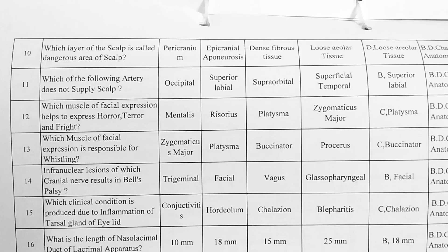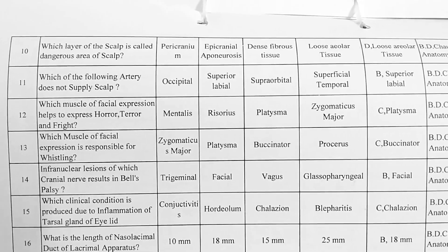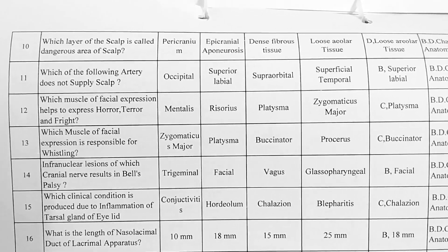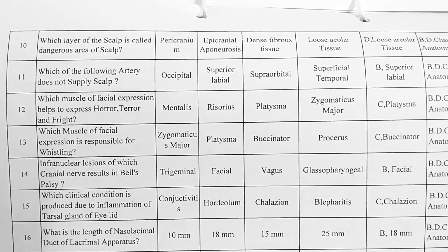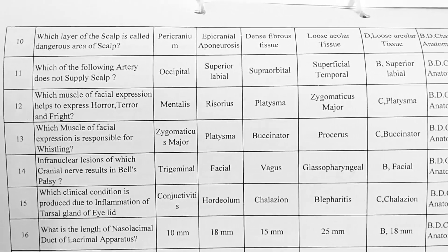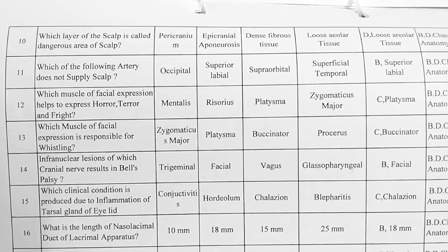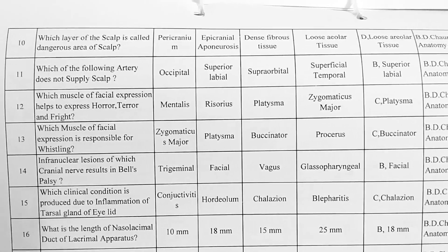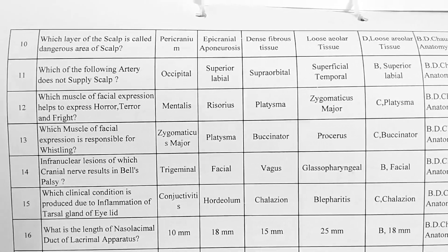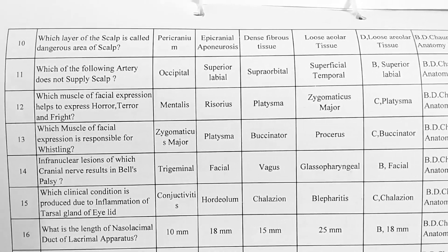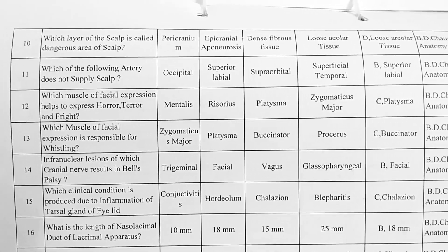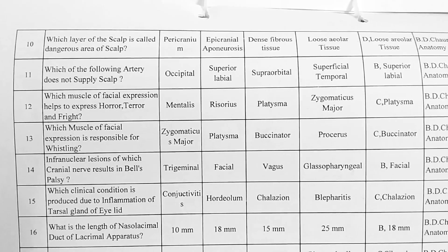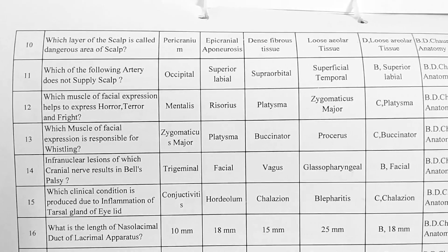Next. Which of the following arteries does not supply the scalp? Options — A: occipital, B: superior labial, C: supraorbital, D: superficial temporal artery. Option B is correct, superior labial artery.